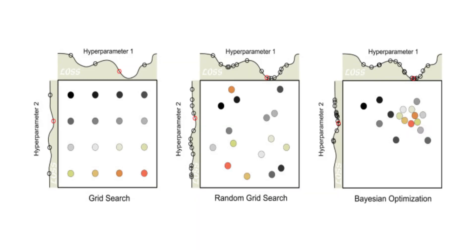Use techniques like grid search, random search, or Bayesian optimization to find optimal values. Keep track of your experiments — what works for one dataset might fail for another.